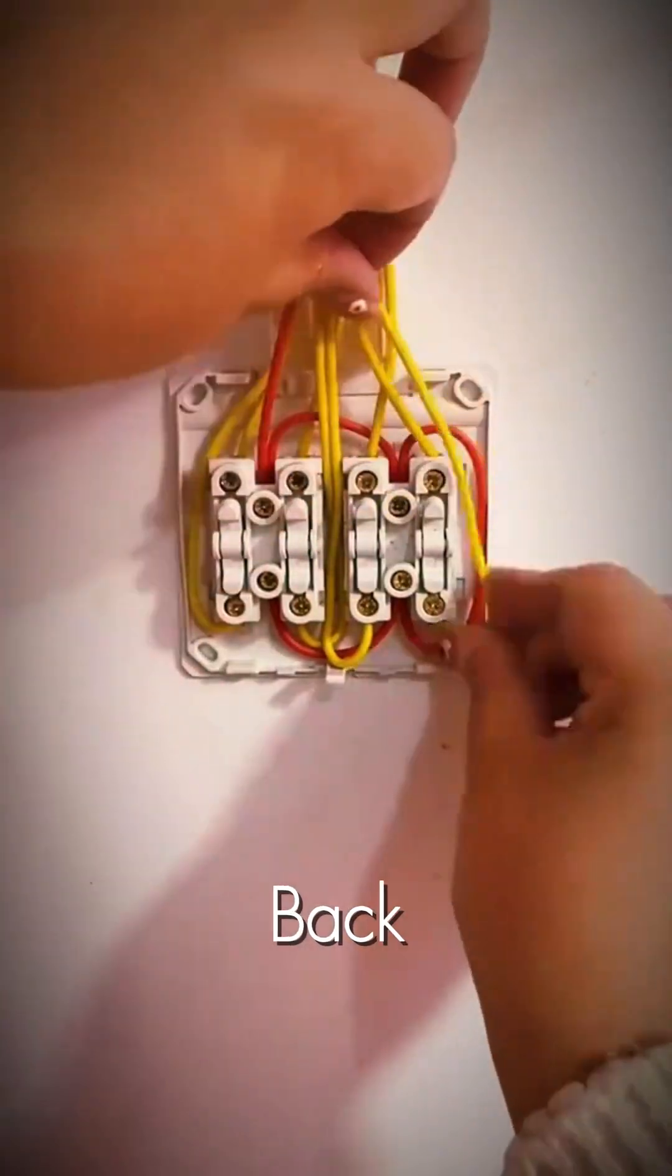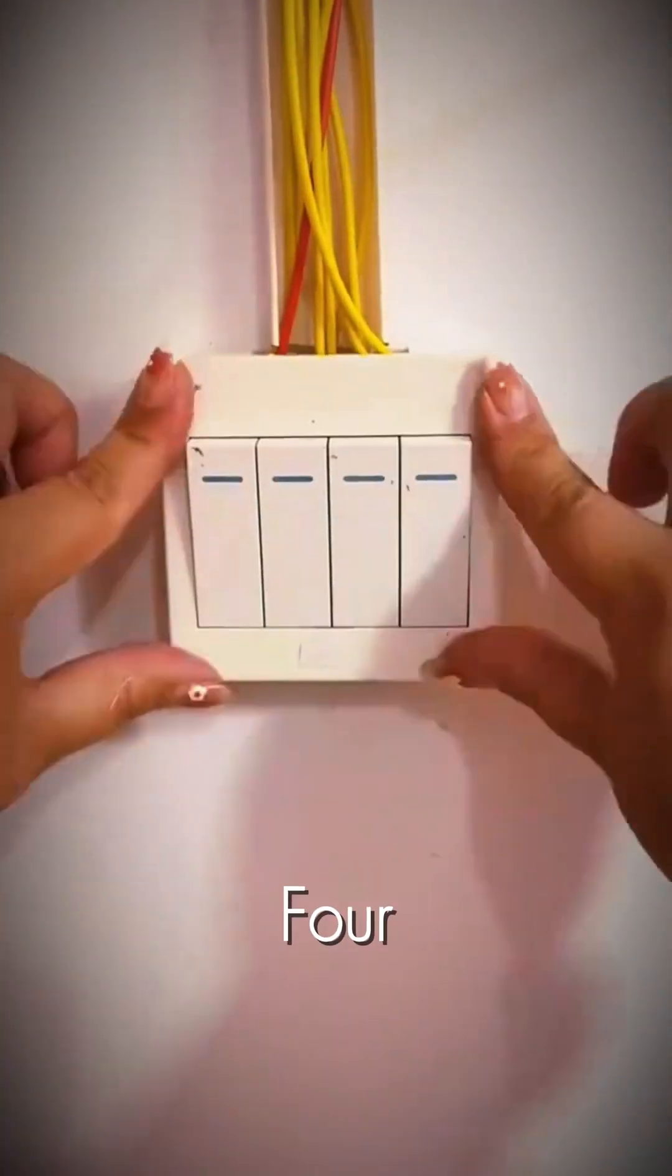simply click the faceplate back into place. That's how you wire a four-gang switch.